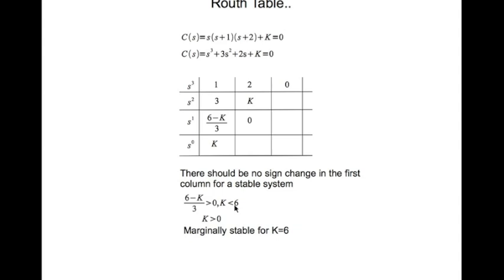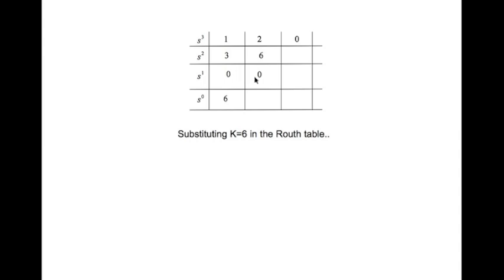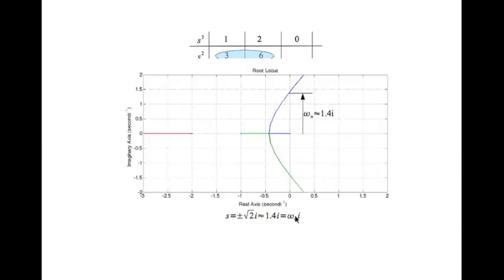When K equal to 6, the system becomes marginally stable. So let's substitute K equal to 6 in the Routh table. If I do that, I get an entire row as zero. What I do is I form the auxiliary equation from the row above the zero row. So this is coefficient of s squared is the constant term. That's my auxiliary equation. If I solve the auxiliary equation, I get s is plus or minus root of 2i, which is nearly equal to 1.4i, which is omega n times i. And earlier we saw from the actual plot that omega n is in fact 1.4.